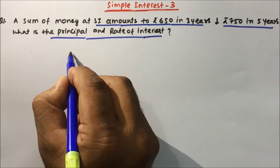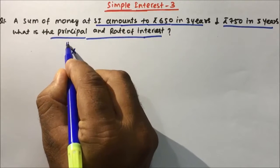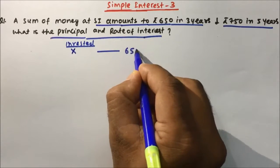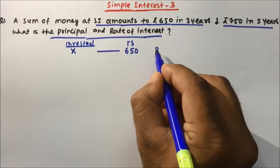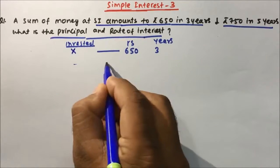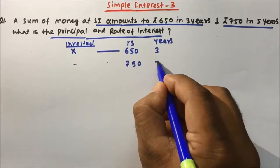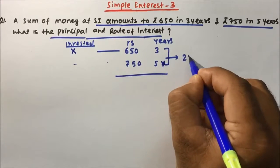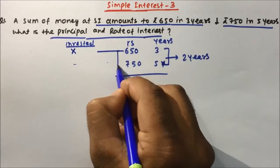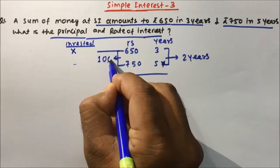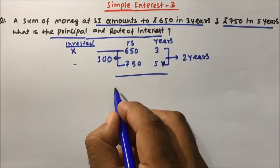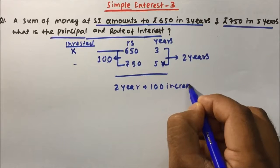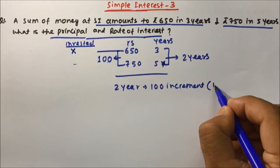Suppose you invested some amount X. This amount X is becoming 650 rupees in 3 years, and the same amount is becoming 750 rupees in 5 years. So basically, in 2 years, what is the increment in the amount? In 2 years, 100 rupees is the increment, and this increment is nothing but interest.